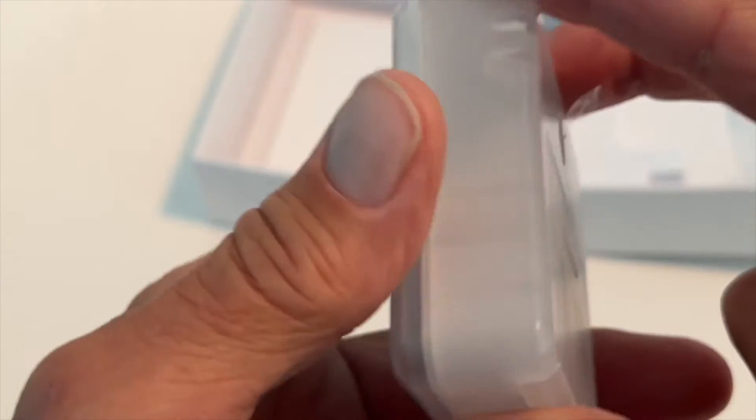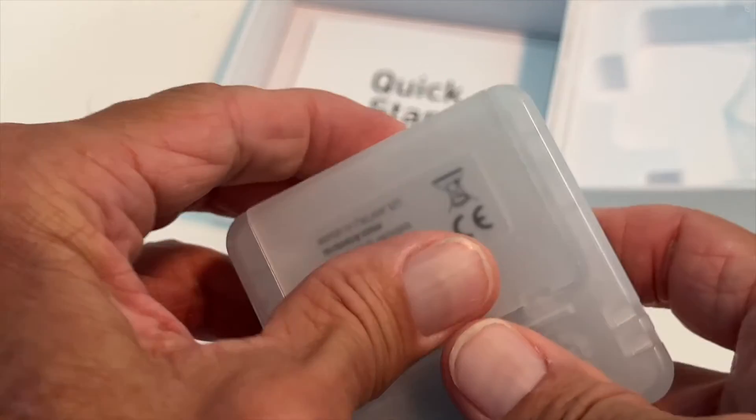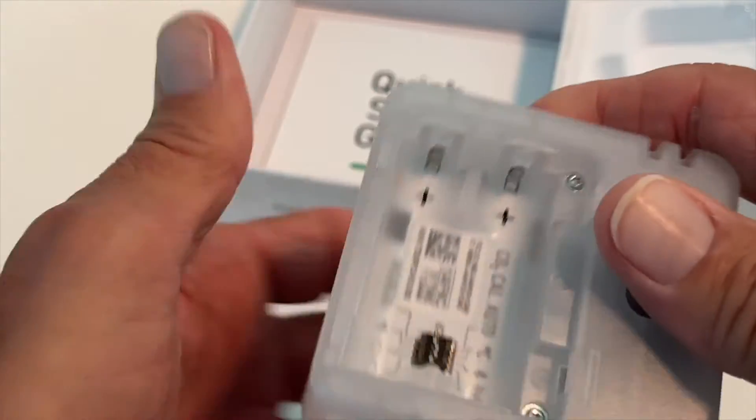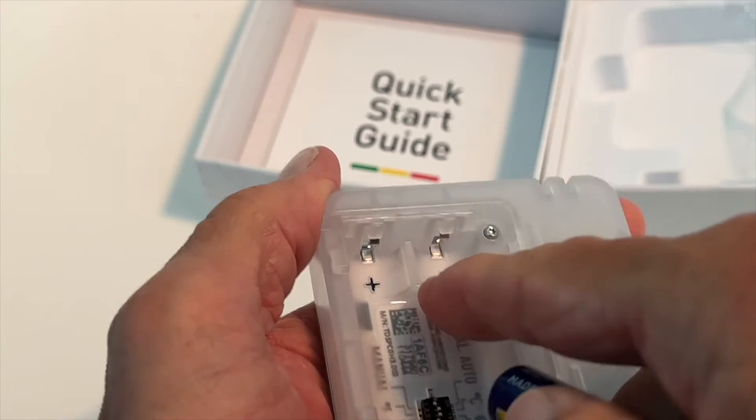So what you have to do is flip it over to the back. There's a little door there. You've got to kind of push it. It pops off. And if you look inside, you're going to see where the batteries go.